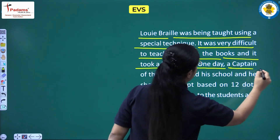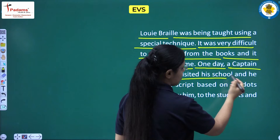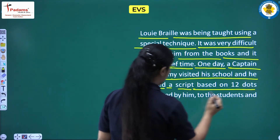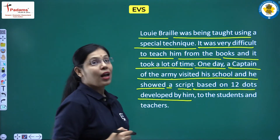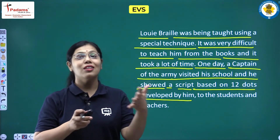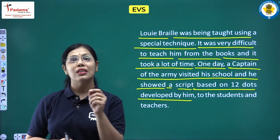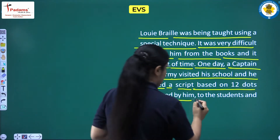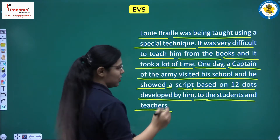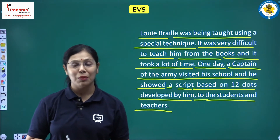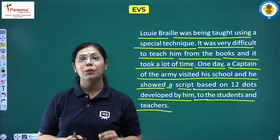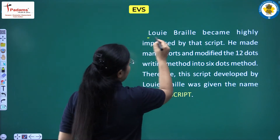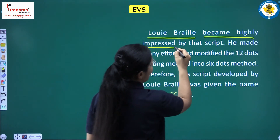One day, a captain of the army visited Louis Braille's school and showed a script based on 12 dots that he had developed. He presented this script to the teachers and students. Louis Braille became highly impressed by that script.